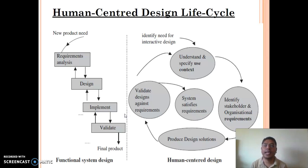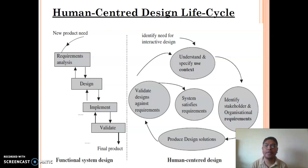In this diagram you can see both life cycles: the conventional system design life cycle and the human centered design life cycle. In the conventional system life cycle, at the first stage we get input from the user, but after that there is no role of the user. We perform design of the product, then implement the product, then validate and launch the product.